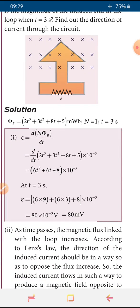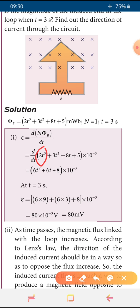This is the basic formula to find the induced EMF in the circuit. We substitute the φB value: 2t³ + 3t² + 8t + 5, multiplied by 10 to the power minus 3 for milliweber. We then apply differentiation. Recalling the differentiation formula: d/dt of xⁿ = n·x^(n−1). This is a formula also studied in mathematics.